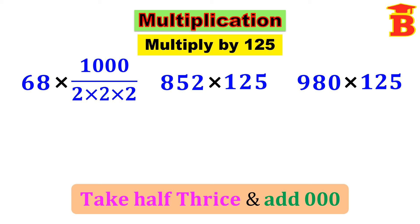Remember: to multiply by 5, which is a single digit number, add a single 0. To multiply by 25, which is a 2-digit number, add 2 zeros. And now 125 is a 3-digit number, so add 3 zeros. The method is: take half thrice and then add triple 0.